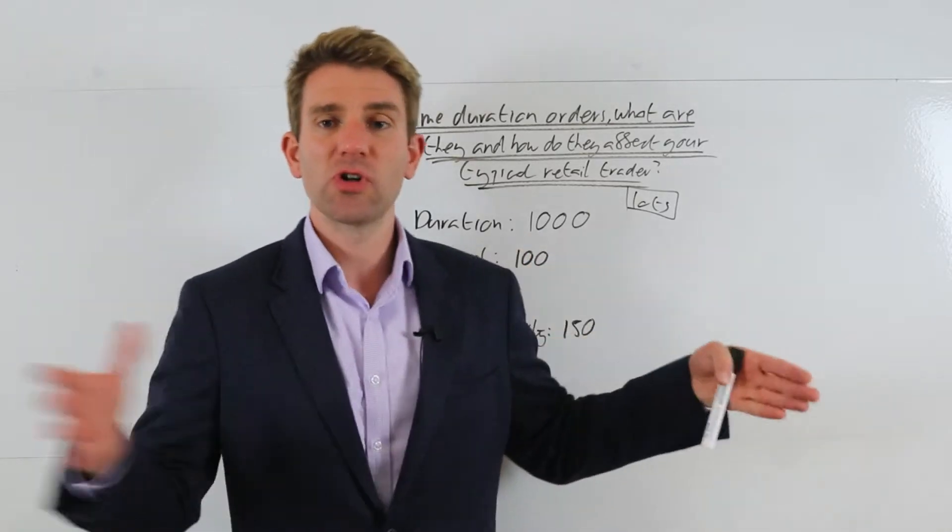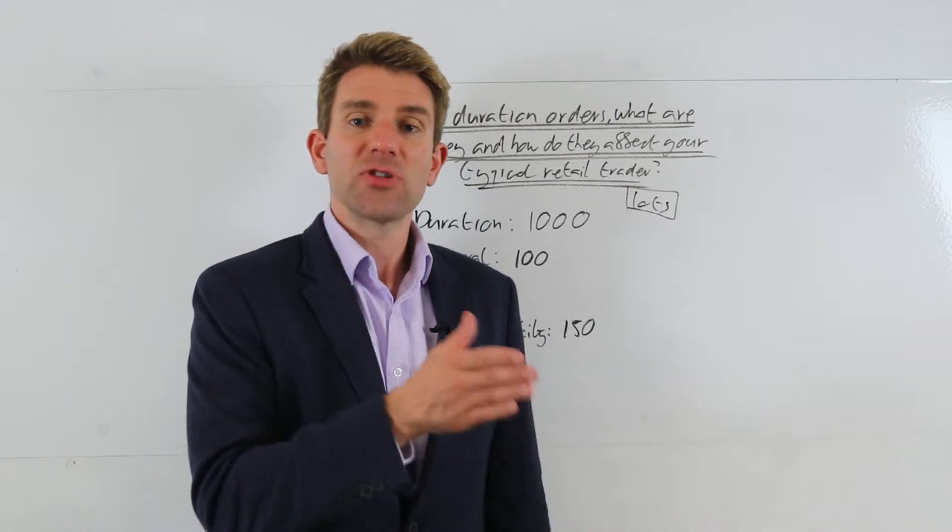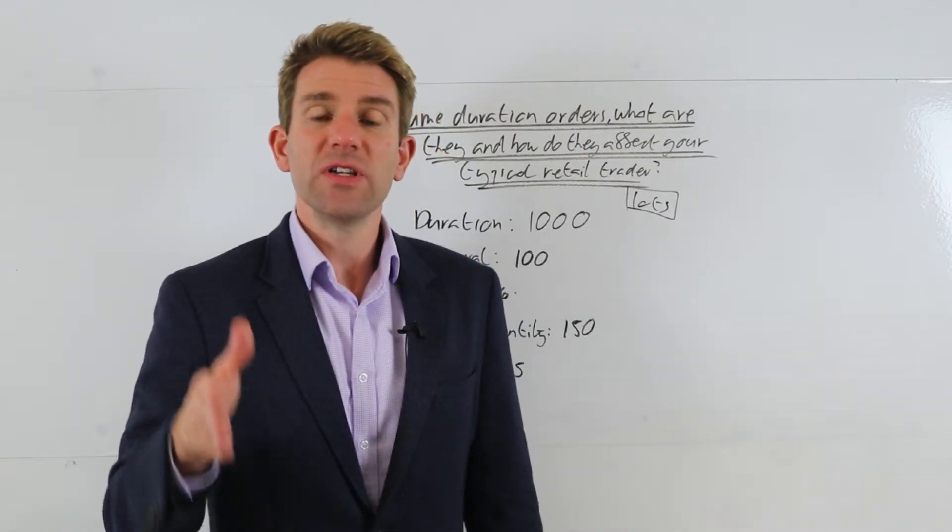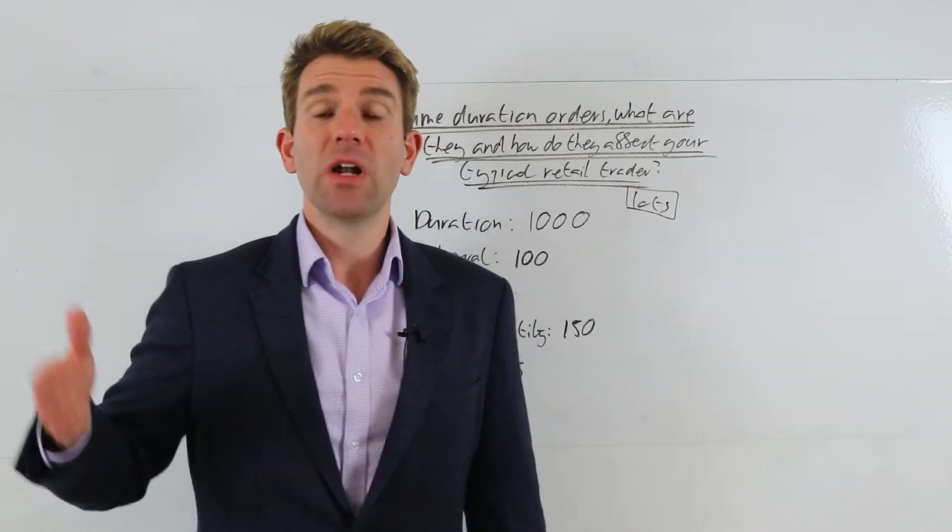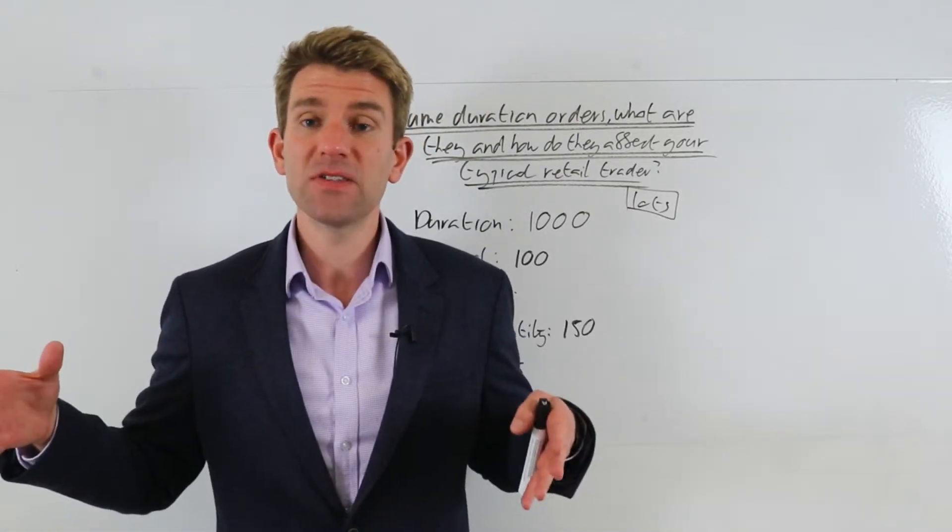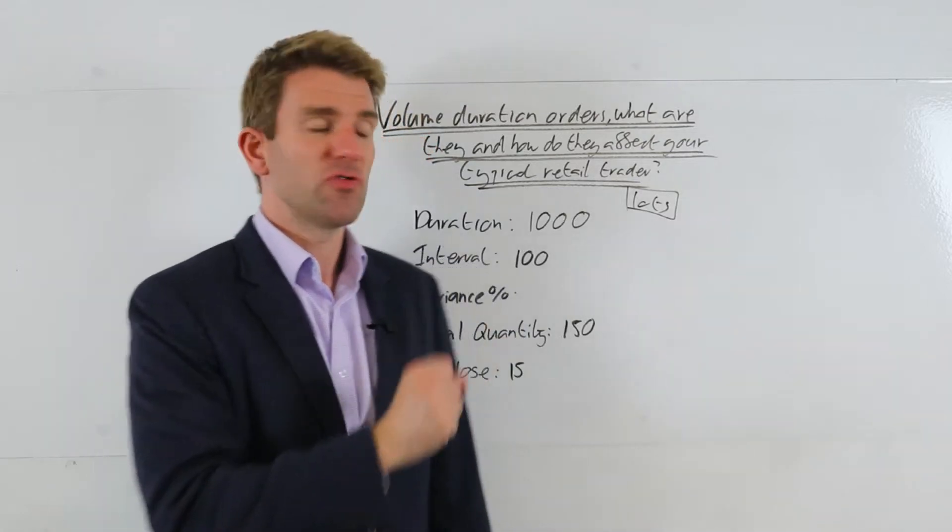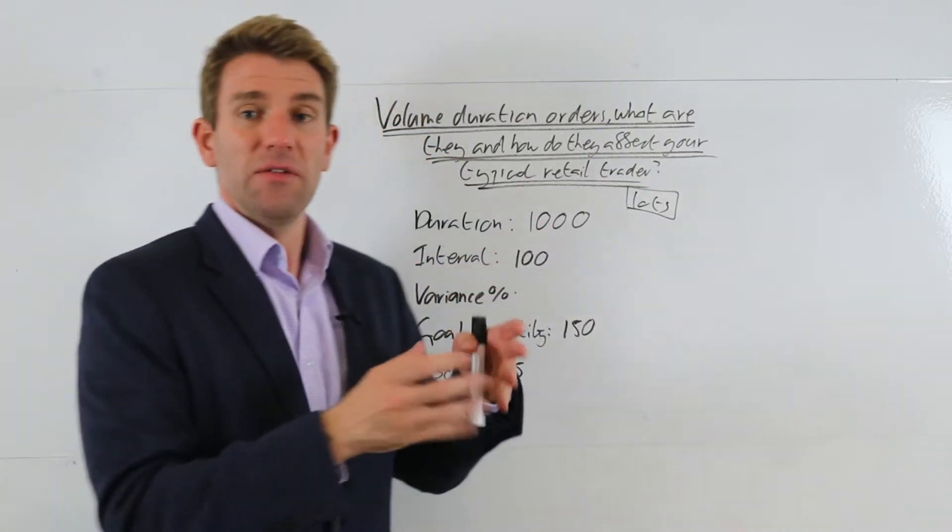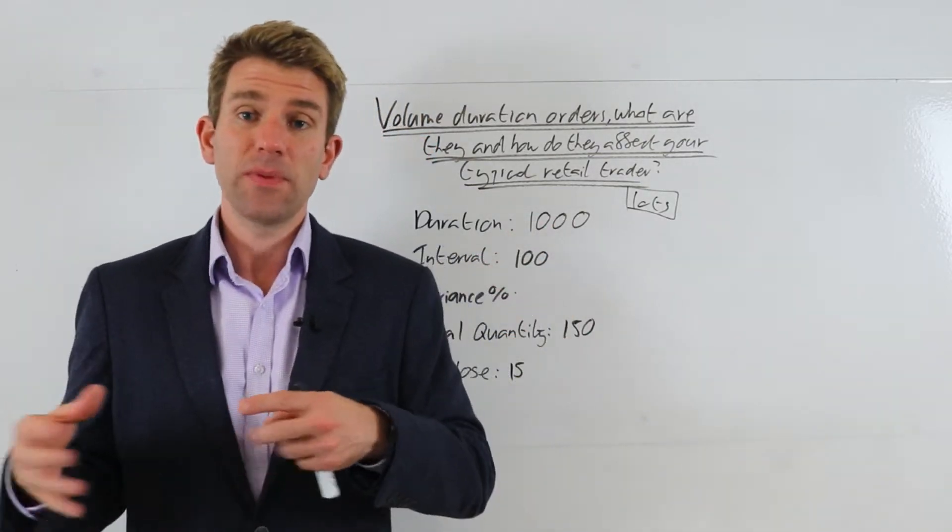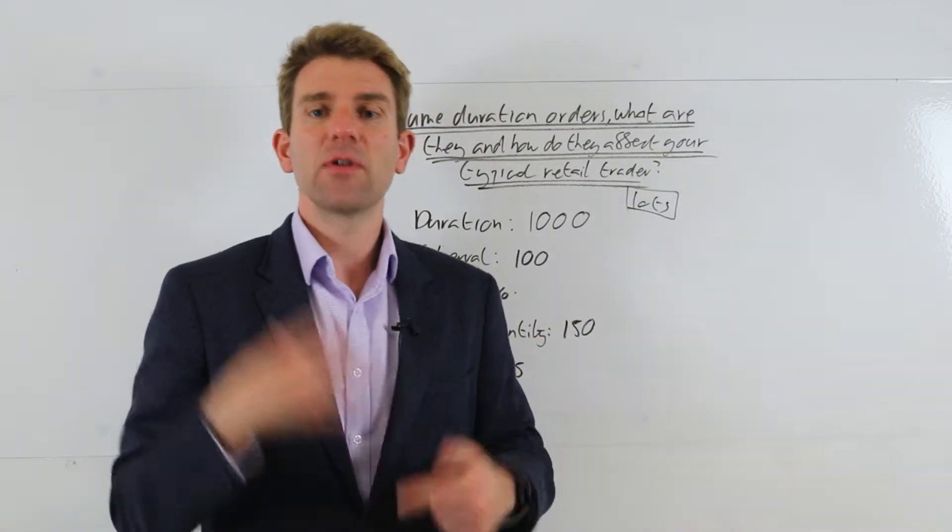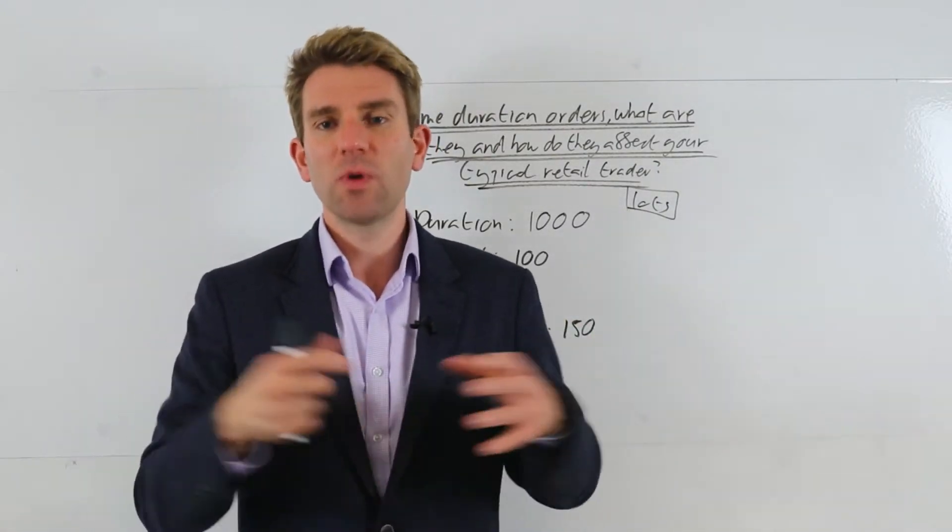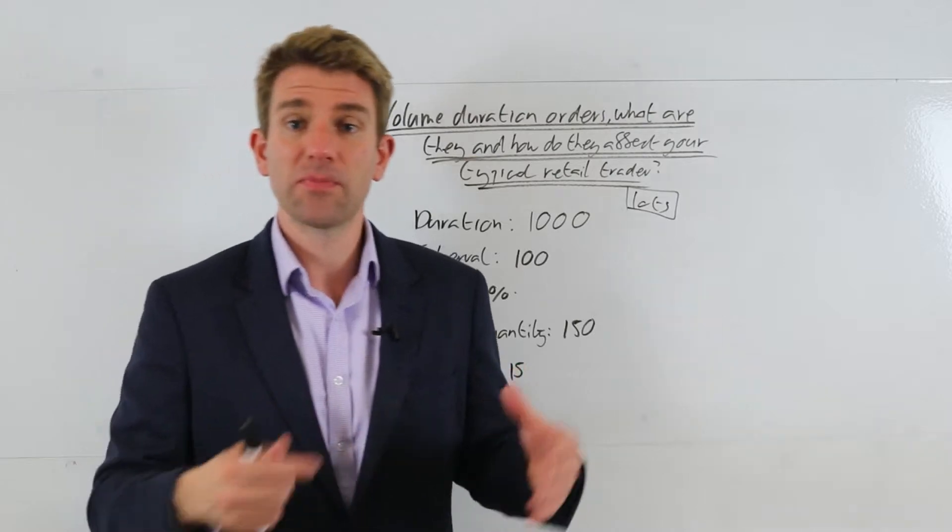If you imagine that your duration was much longer, then the execution frequency is going to be much lower over something like lunchtime where the volume dies off, and it's going to speed up again into the close. Which is why we see that kind of smile shape for volume across the intraday chart. Because as volume starts to pick up, these algos start to get more active. And also there'll be constraints on the day as well when they have to get more active, and also relative to price.